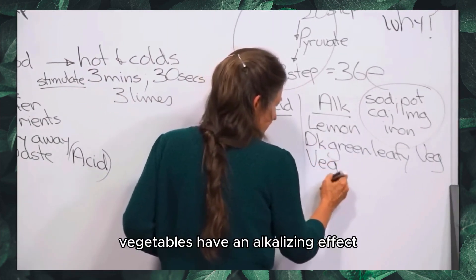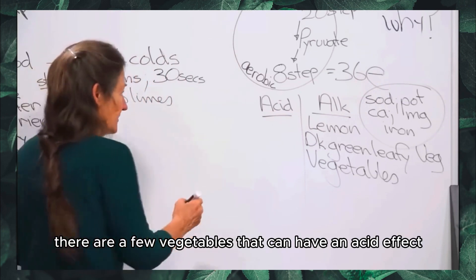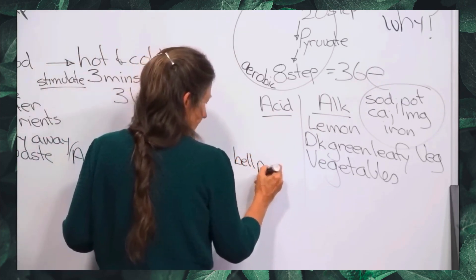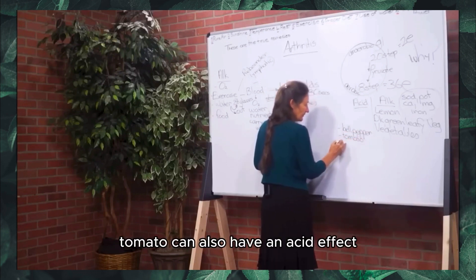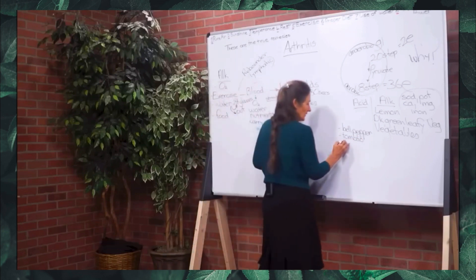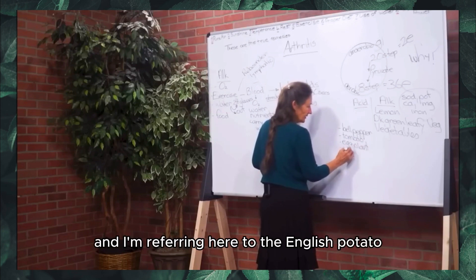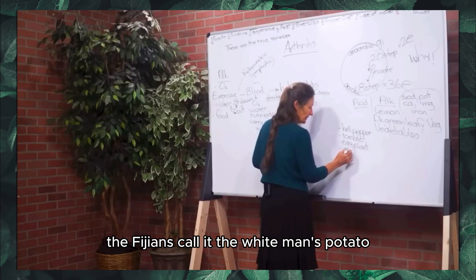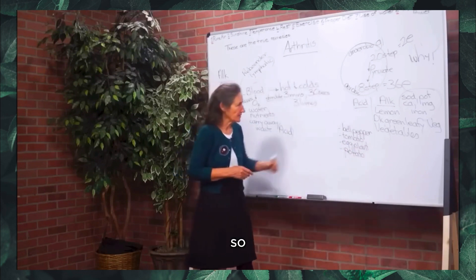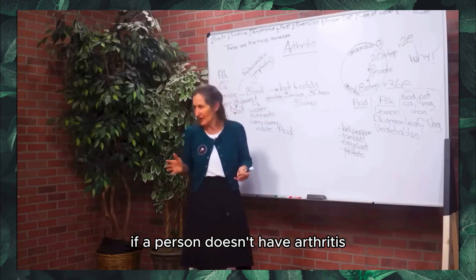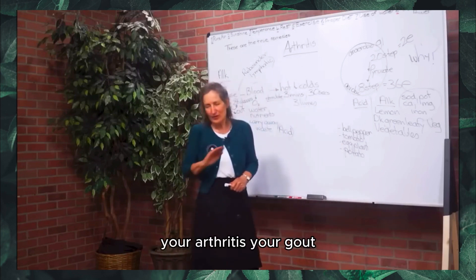Vegetables generally have an alkalizing effect, but for the arthritic person, a few can have an acid effect — specifically bell pepper, tomato, eggplant (also called aubergine), and the English potato (not the sweet potato, which is actually a yam). When wanting to conquer arthritis, these nightshade vegetables must stop. If you don't have arthritis, you can often eat them, but if you want to conquer arthritis or gout, these things have to stop — not forever, just until you've conquered it.